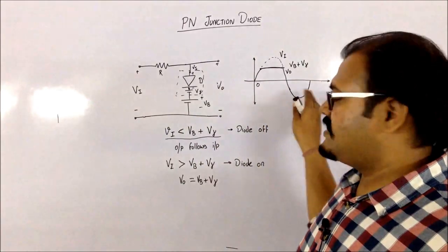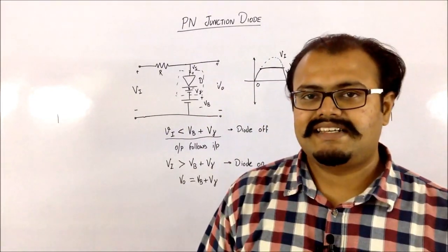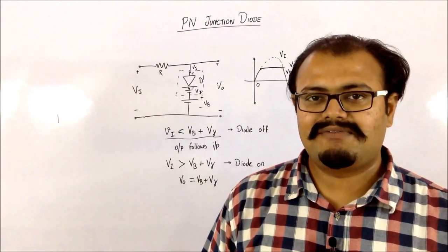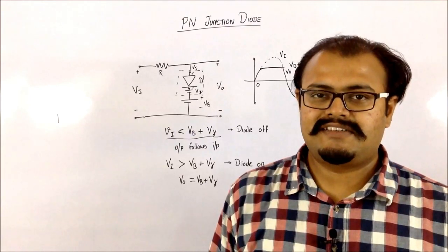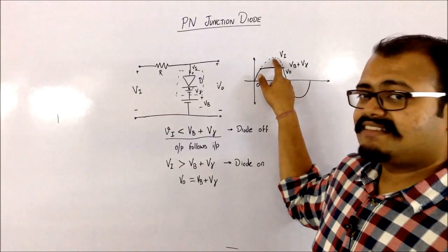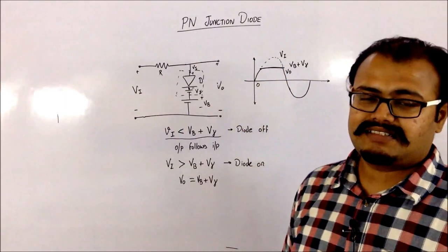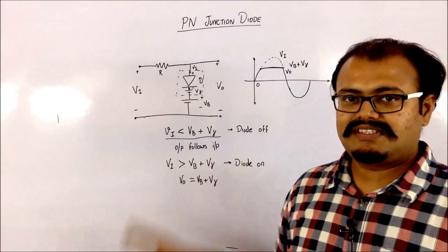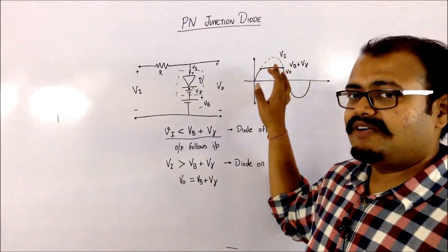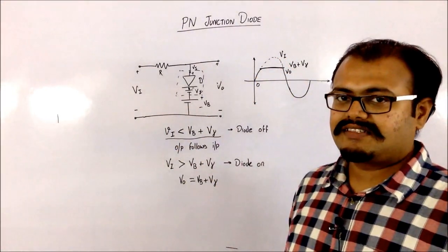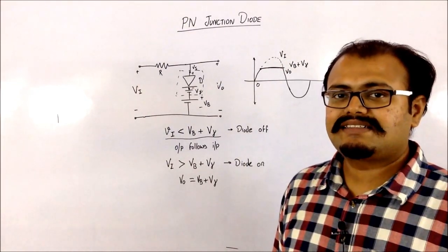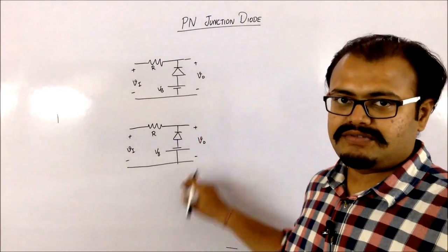The rest of the waveform remains the same as the input. A clipper circuit is used when you don't want very high voltages to be supplied to a particular part of a circuit — for example, if I don't want the maximum peak to reach the output, I can use a clipper because it will not allow a very high voltage to reach the output. Let us now analyze more types of clippers.